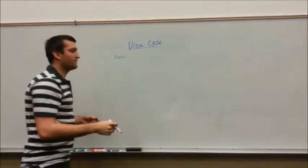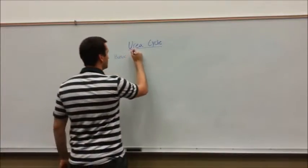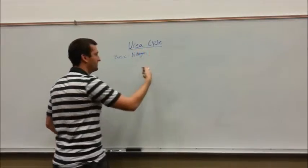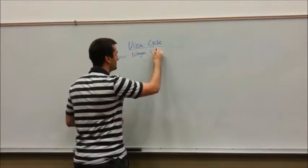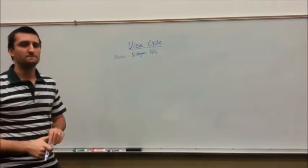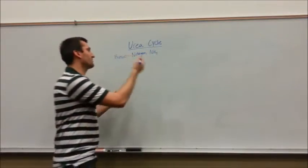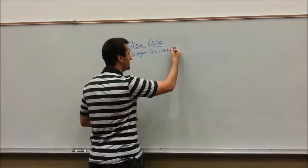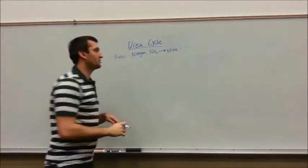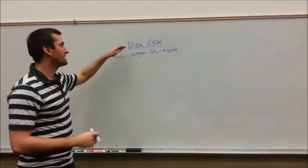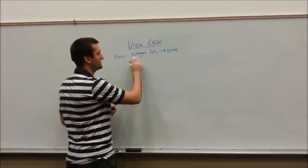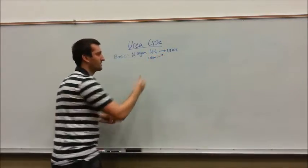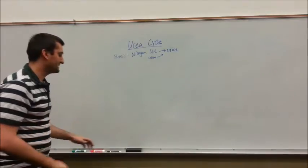Our goal of the urea cycle is to get rid of nitrogen in the form of NH. We don't like nitrogen in the body. And then our end product is going to be excreted in the urine. So your urine is full of nitrogen in the form of urea. So this nitrogen we're going to get rid of it in the form of urea and it'll go into your urine. So that's the very basics.